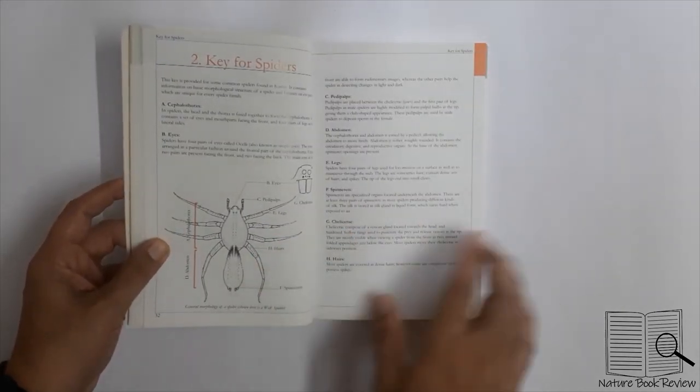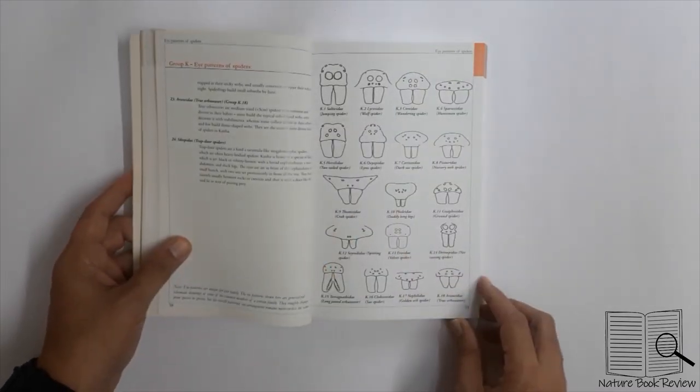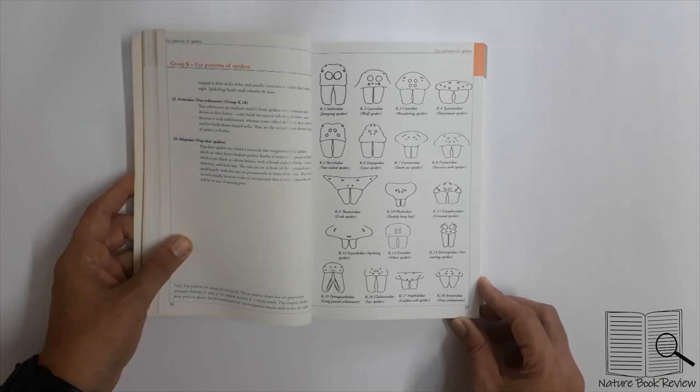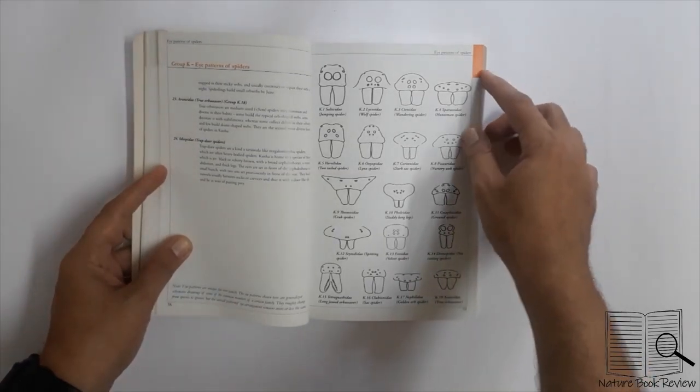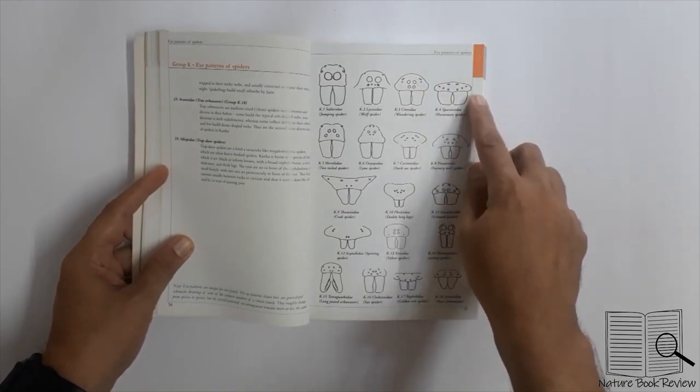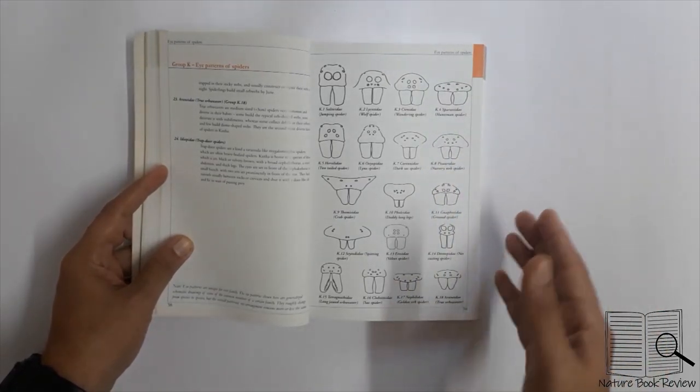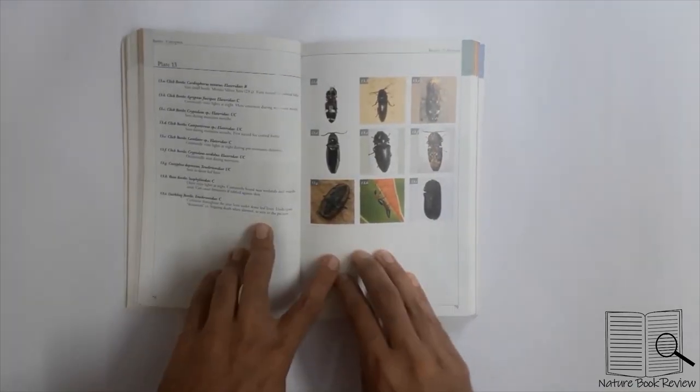The key for spiders shows basic morphology of a spider, and spiders have been identified based on the position of the eyes. On the right hand side there's a color coding given that corresponds to specific groups of insects or spiders. Going through the plates, you can see there are photographs.